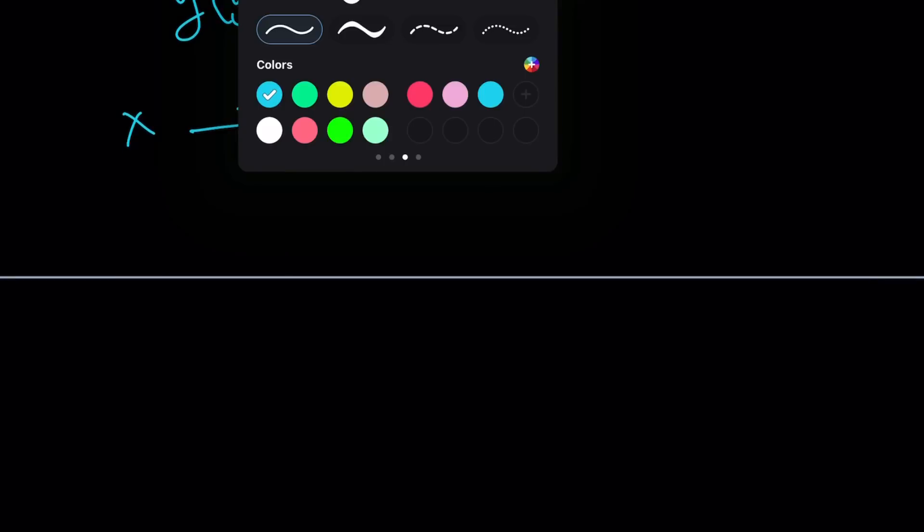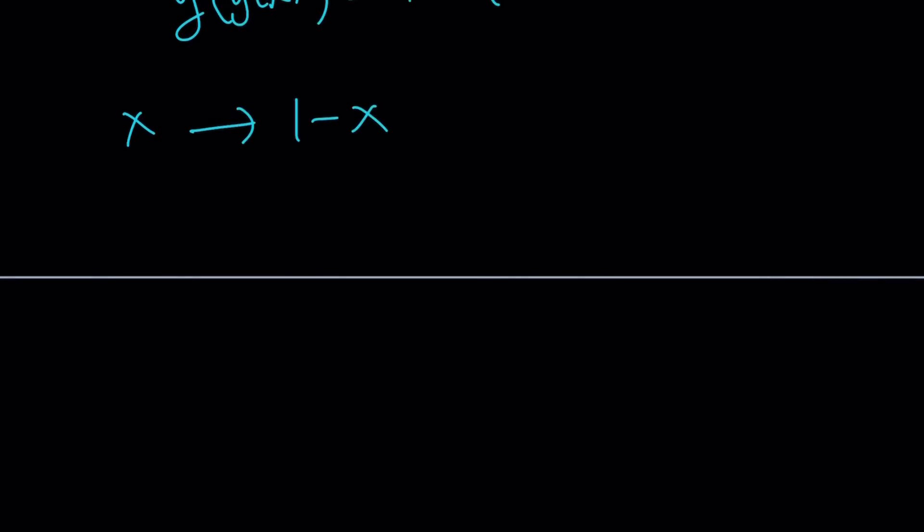But which equation are we going to use? The original one. There's only one equation, by the way. We have 2f(x) minus f(1-x) equals x². That's my equation, and now I'm going to replace x with 1-x. Let's do it everywhere.